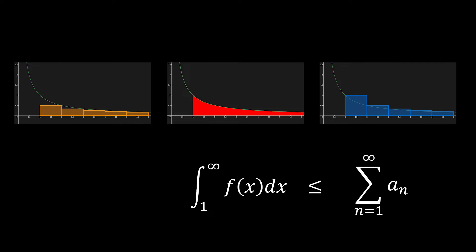Now let's consider the opposite scenario. Suppose the integral from 1 to infinity of f of x diverges to infinity. In this case, from the perspective of the right infinite series, values that were smaller than itself become infinite. Consequently, the right infinite series must also diverge to infinity. This is how, in the integral test, the fate of the infinite integral and the infinite series becomes intertwined.